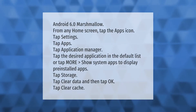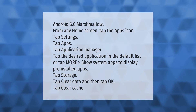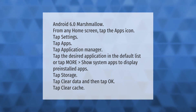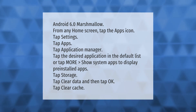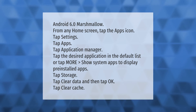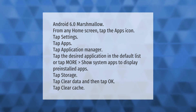Android 6.0 Marshmallow: from any home screen, tap the Apps icon, tap Settings, tap Apps, tap Application Manager, tap the desired application in the default list, or tap More > Show System Apps to display pre-installed apps. Tap Storage, tap Clear Data and then tap OK, then tap Clear Cache.